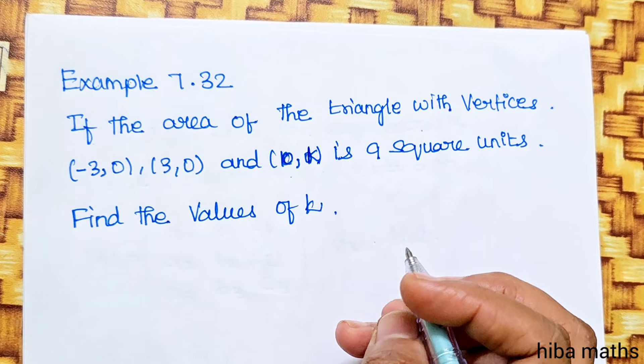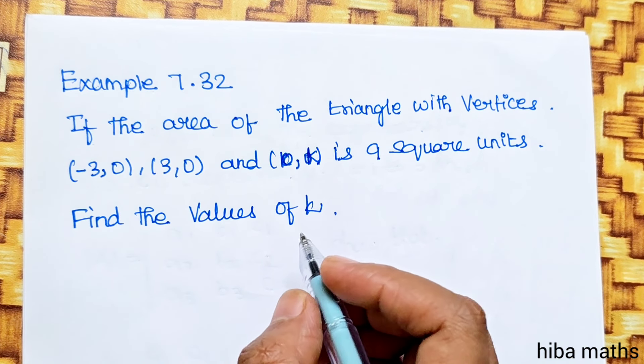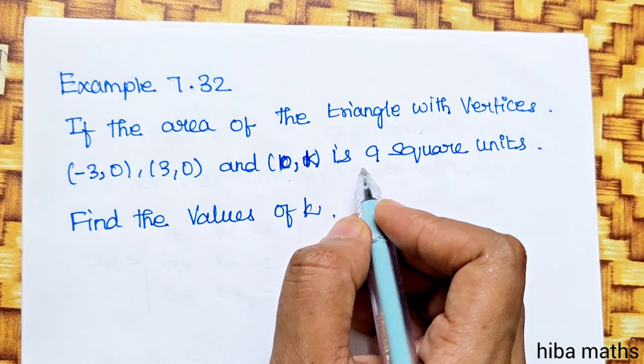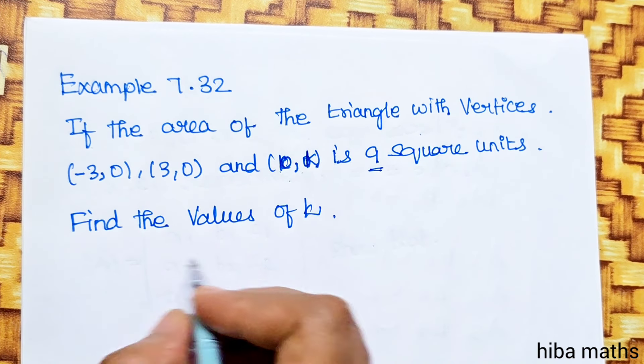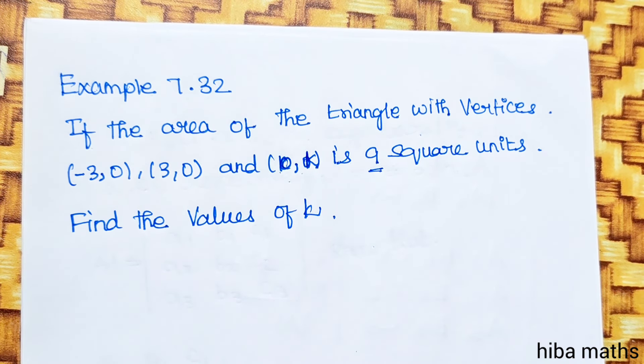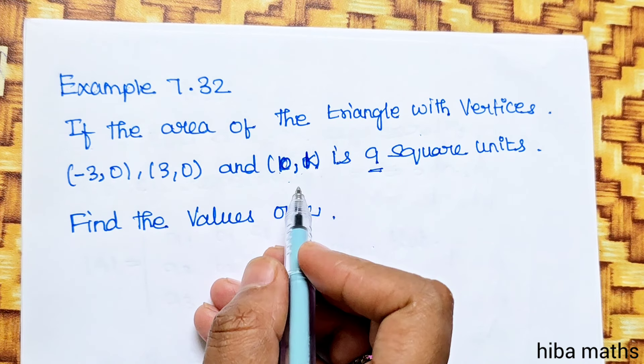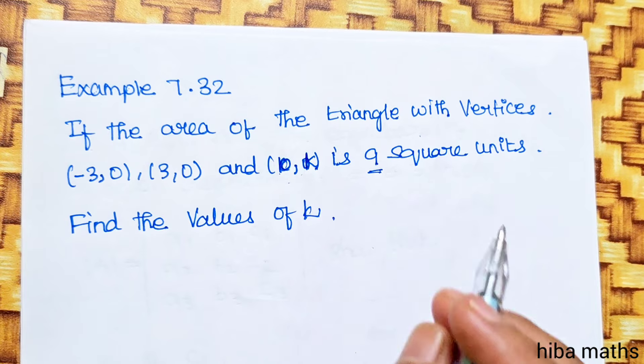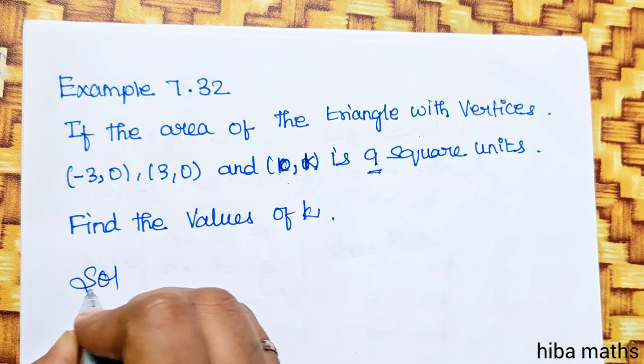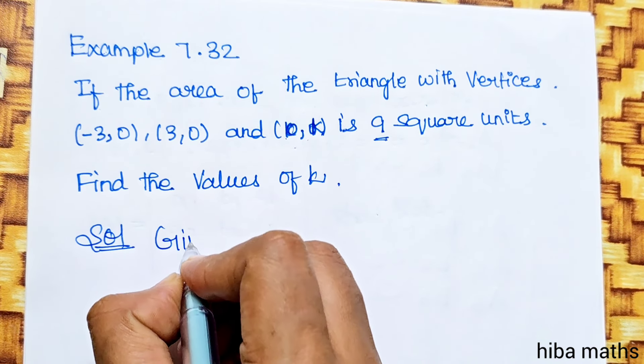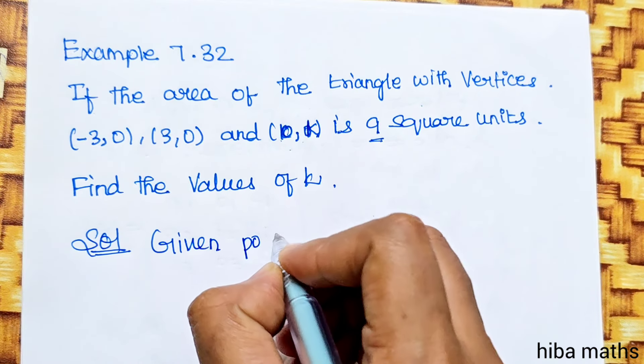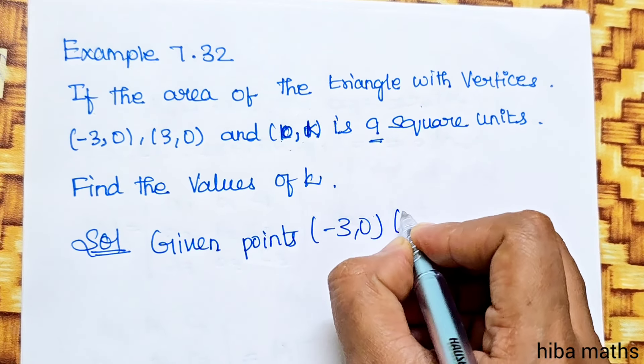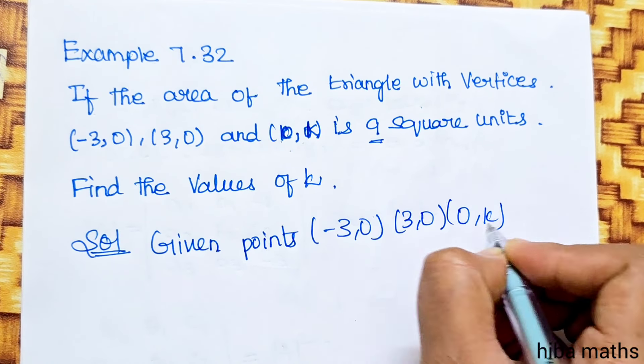Example 7.32: If the area of a triangle with vertices (-3,0), (3,0), and (0,k) is 9 square units, find the values of k. So we have 3 points in the triangle and need to find the value of k.